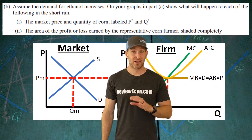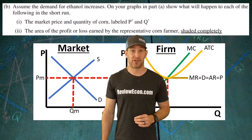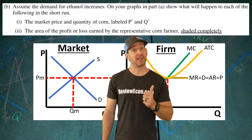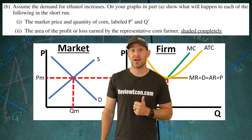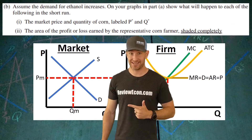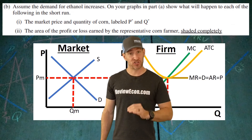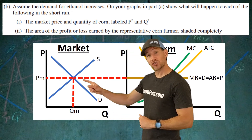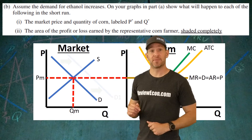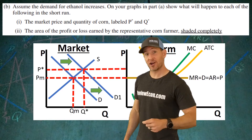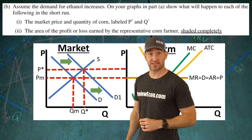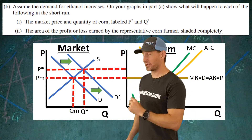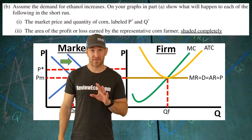For part B, we have an increase in the demand for ethanol. Ethanol has corn as a primary input, so there's going to be a derived increase in the demand for corn. We're going to show an increase in the demand for corn on that market graph — show the rightward shift of that demand curve and indicate with P star and Q star the increase in the equilibrium price and equilibrium quantity. That'll get you the point for the market.